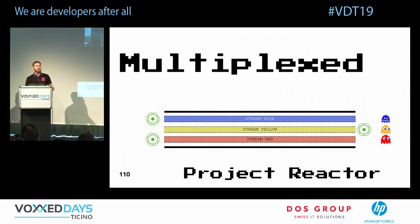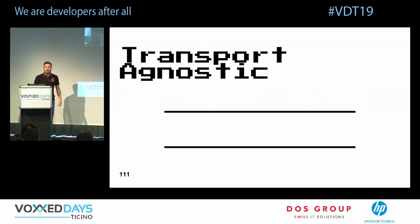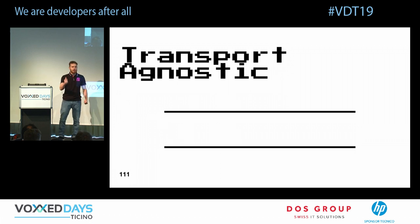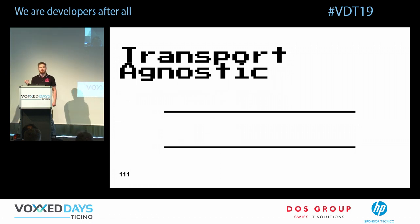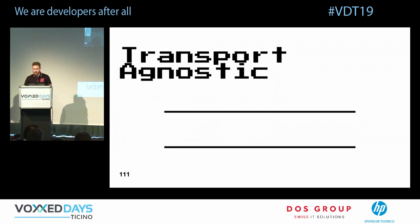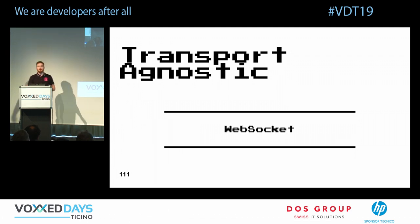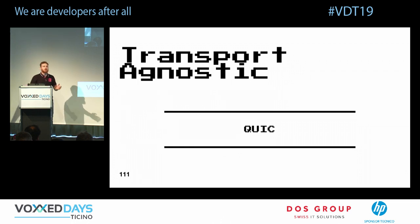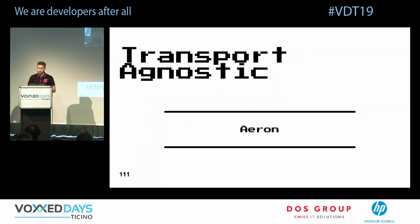RSocket is transport-agnostic — unlike gRPC, which is tightly coupled with HTTP/2, RSocket defines a binary protocol that can run over WebSocket, TCP, QUIC, or Aeron (a reliable UDP-based transport). You can switch transport without changing your application-level API — you're not locked to any particular transport.